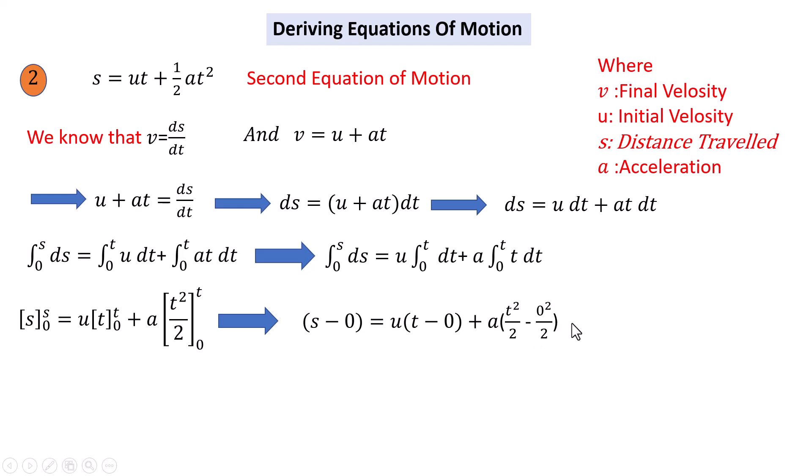If we simplify this equation more, we get s equals ut plus one-half at squared. That is the second equation of motion. Don't forget to like the video and subscribe to our channel.